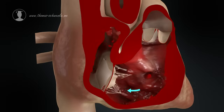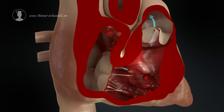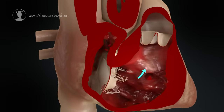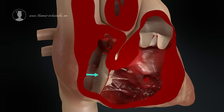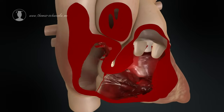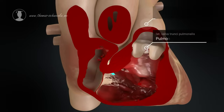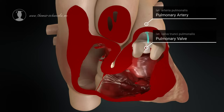The contraction of the right ventricular muscles causes the pulmonary valve to open. This ultimately transports the blood to the lungs via the pulmonary artery.